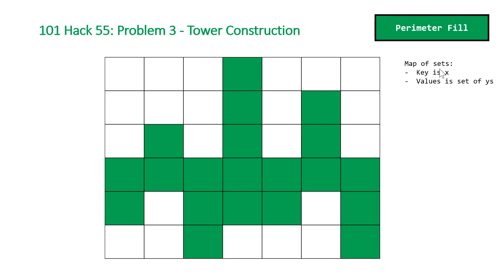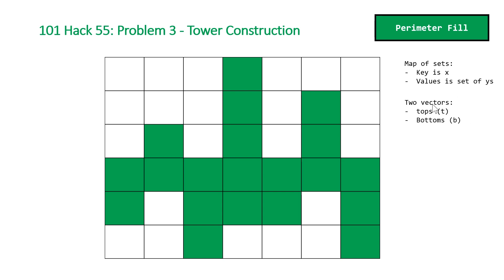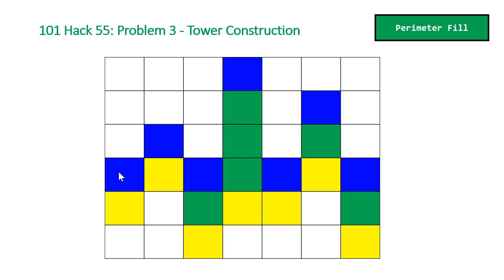We create a map of sets where the key is the x coordinate and the set stores all corresponding y coordinates. We'll also show a different solution using a vector of pairs with sorting. From this map we construct two vectors — t and b — storing the tops and bottoms. By iterating over all pairs in our map we take the lowest y value in the set for the bottom and the highest for the top. For our example, blue cells represent the top of our current city and yellow the bottom.